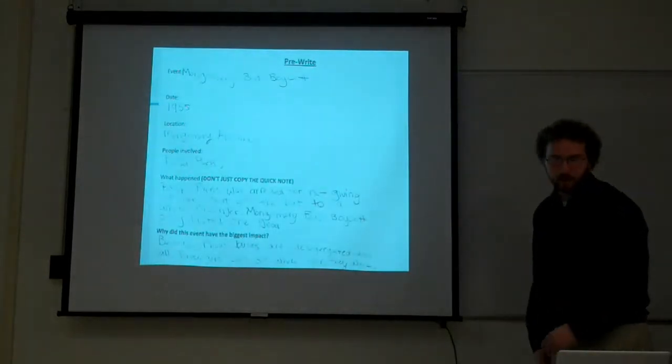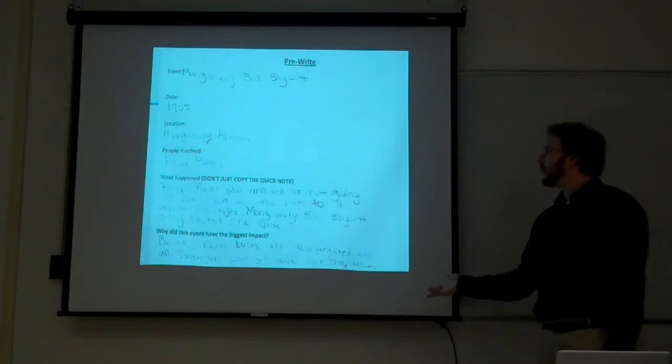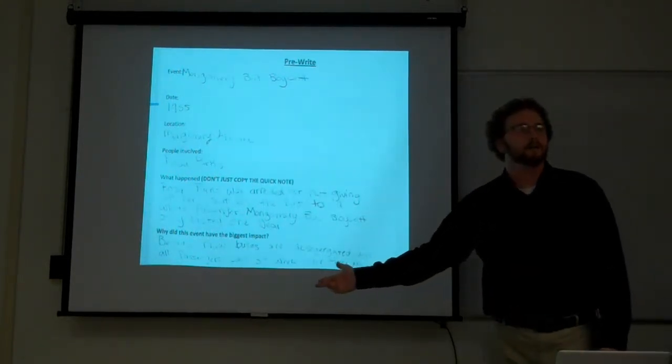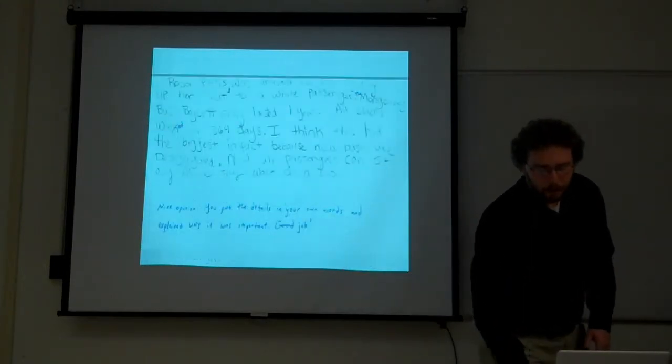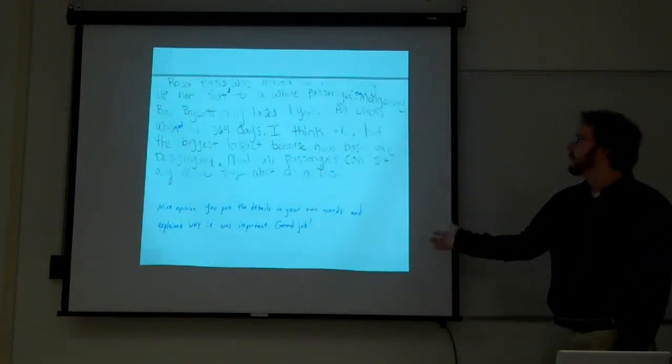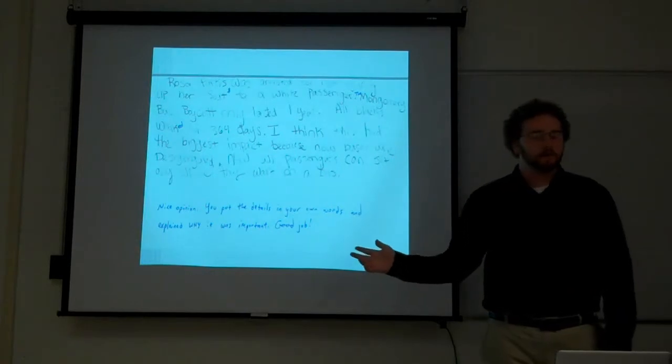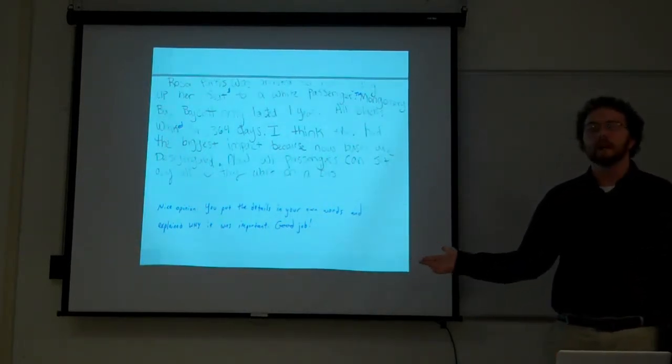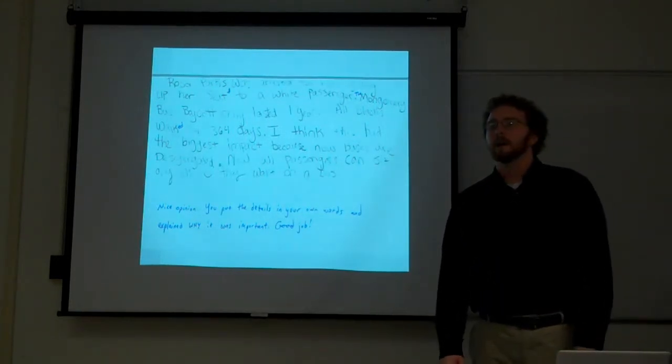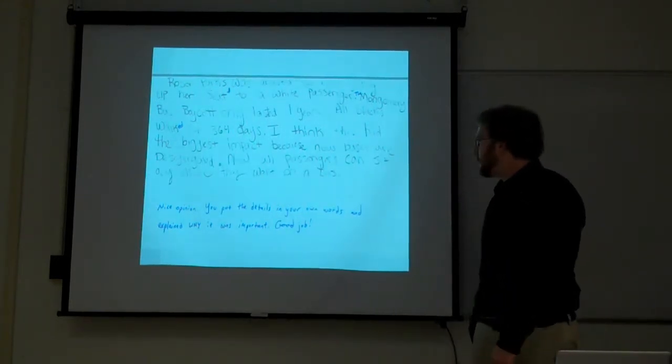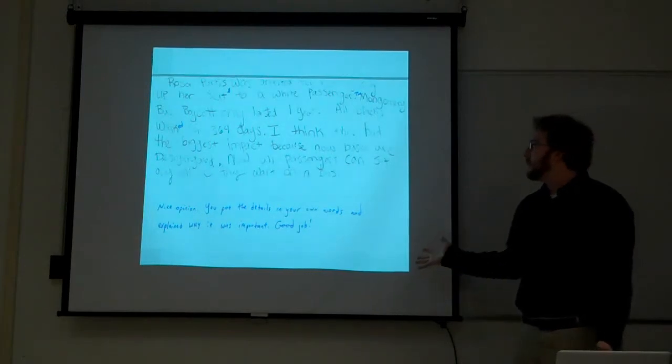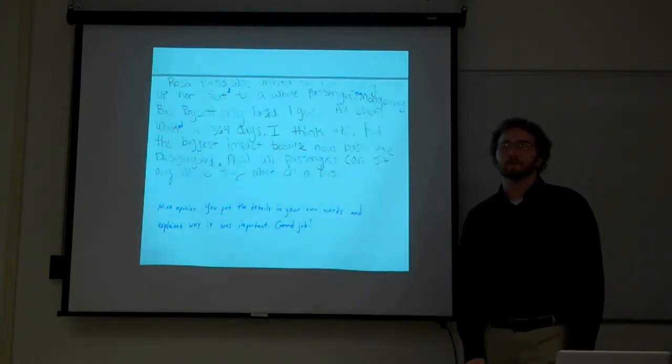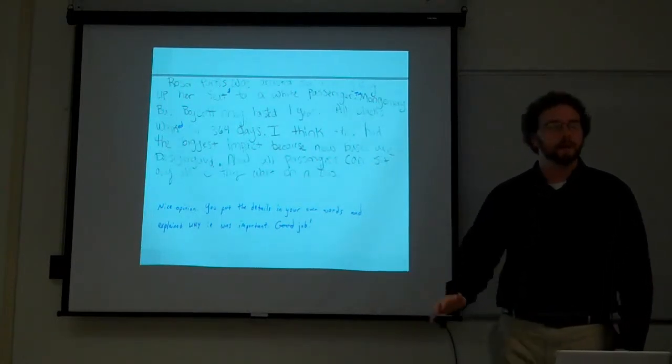So student A, pre-write, she chose the Montgomery Bus Boycott. She puts the quick notes in her own words, and then describes why it had such an impact. And so in her writing, I was very pleased she was able to transfer this into a pretty good paragraph. She described it in her own words, and then that it had the biggest impact because it desegregated buses in Alabama. Honestly, social studies-wise, I was pleased with it. The only room for improvement I saw was kind of grammar and paragraph structure.